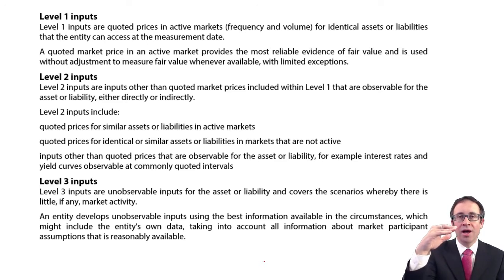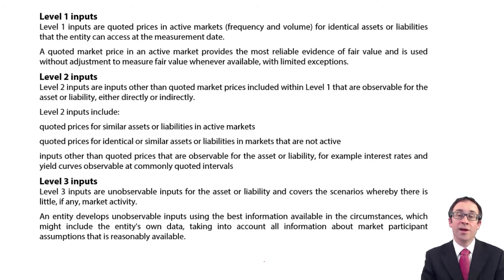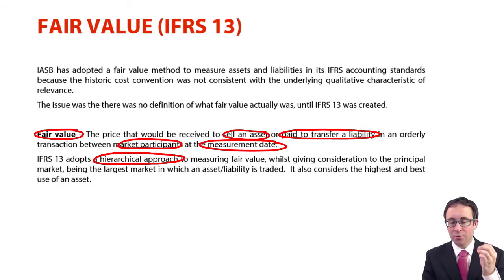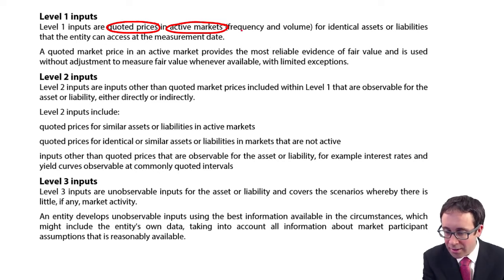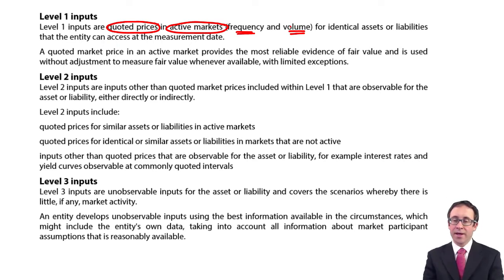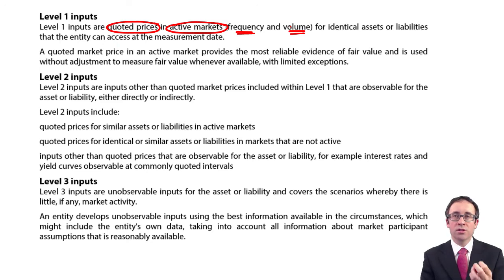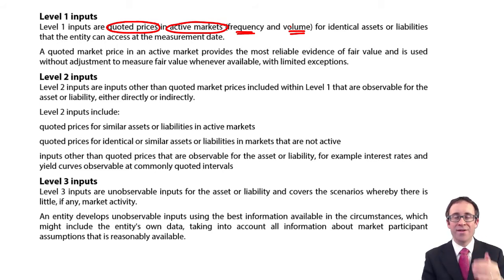We look first to see if the asset or liability can be fair valued under level one; if not, level two; and if not, level three. Level one, going back to the definition's focus on market participation, means looking at quoted prices on an active market — with high frequency and high volume. So if we have an investment in shares quoted on the London Stock Exchange, we use the share price at the reporting date to fair value that financial asset. Seems logical, seems fine — nothing wrong with that.